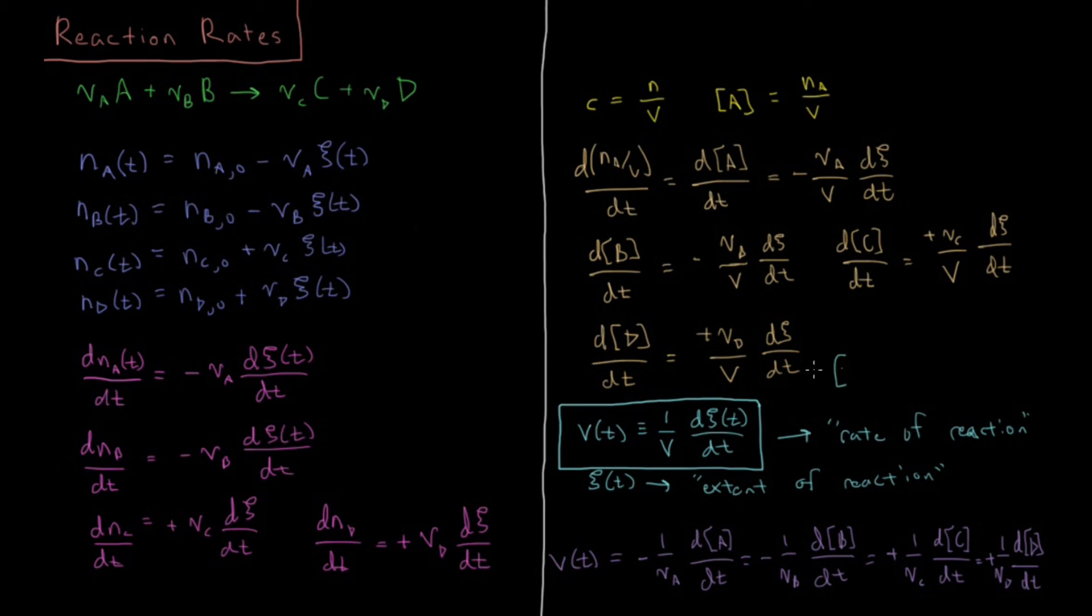So the units of V of t would be mole per liter per second, which is also equal to molar per second. So our reaction rate has units of molar per second, and it tells us about how the change in concentration would be for some chemical species with a stoichiometric coefficient of 1.